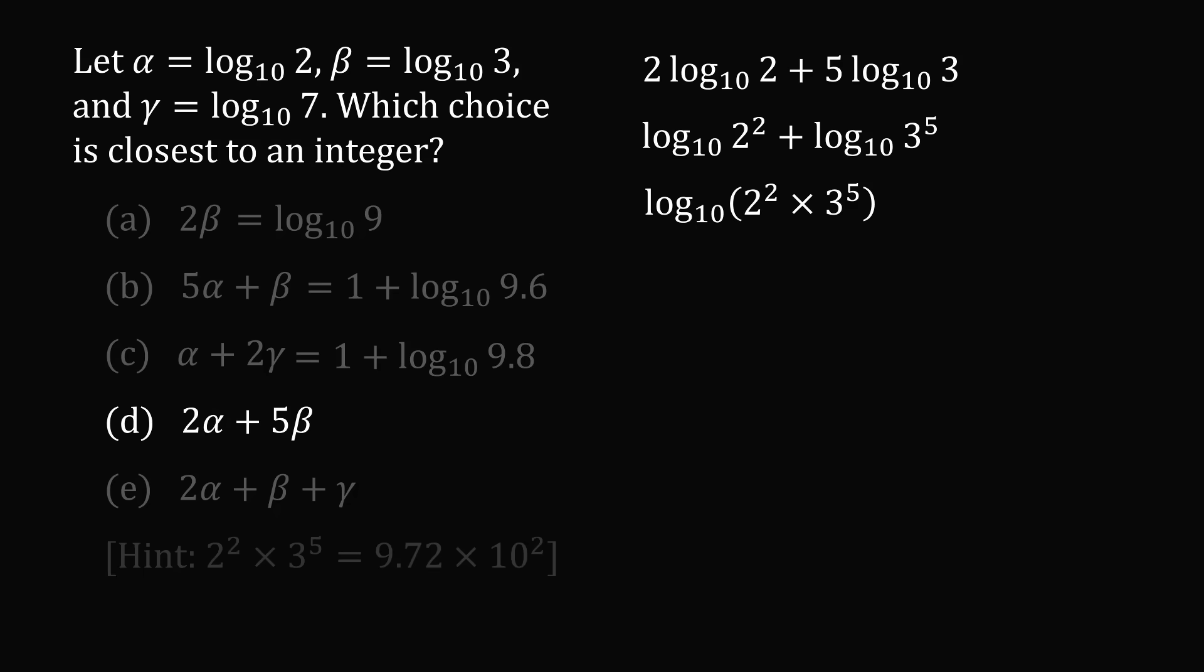But we now bring up the hint that 2 squared multiplied by 3 to the power of 5 is equal to 9.72 times 10 squared. So we can substitute this in and we can then break this apart. Now we have log base 10 of 10 squared, which is equal to 2. So this all simplifies to be 2 plus log base 10 of 9.72.